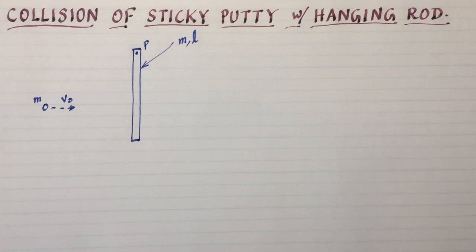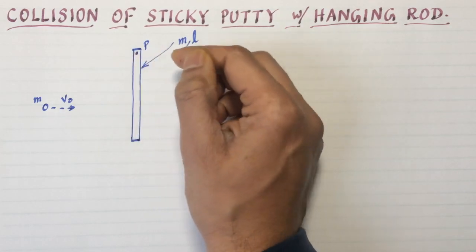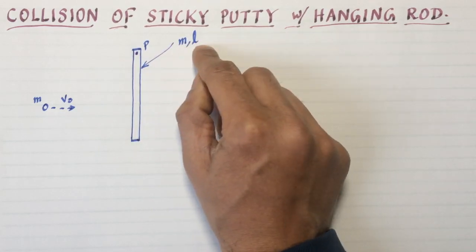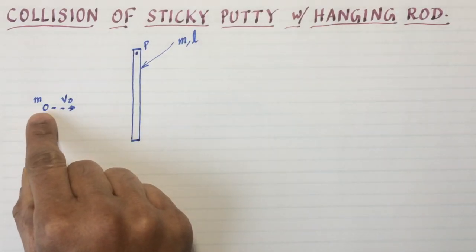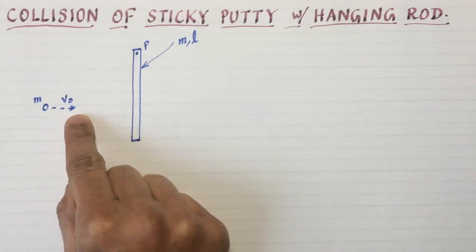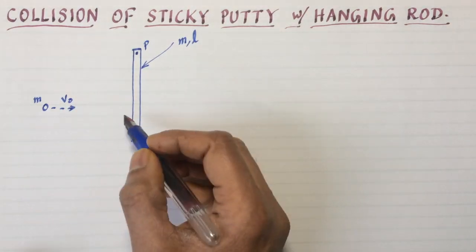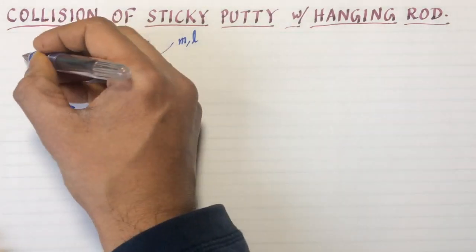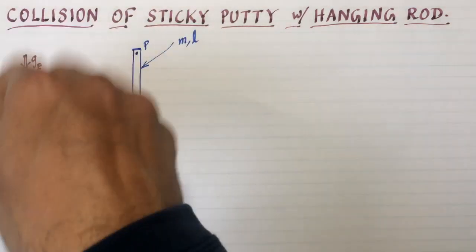Today I'm going to be talking about a problem which is the collision of a sticky putty with a hanging rod. The rod is hung by some pivot and I'm taking the mass of the rod to be m and the length of the rod to be L.